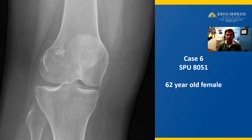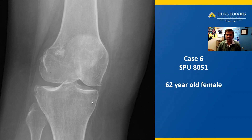We also know that because this mass has this white sclerotic bony margin, the body has had enough time to build up a barrier — a wall against the growth of this tumor. So we know that this is a slow-growing, indolent, and perhaps benign neoplasm. Finally, this patient's epiphyses are closed, so we know that she is skeletally mature.